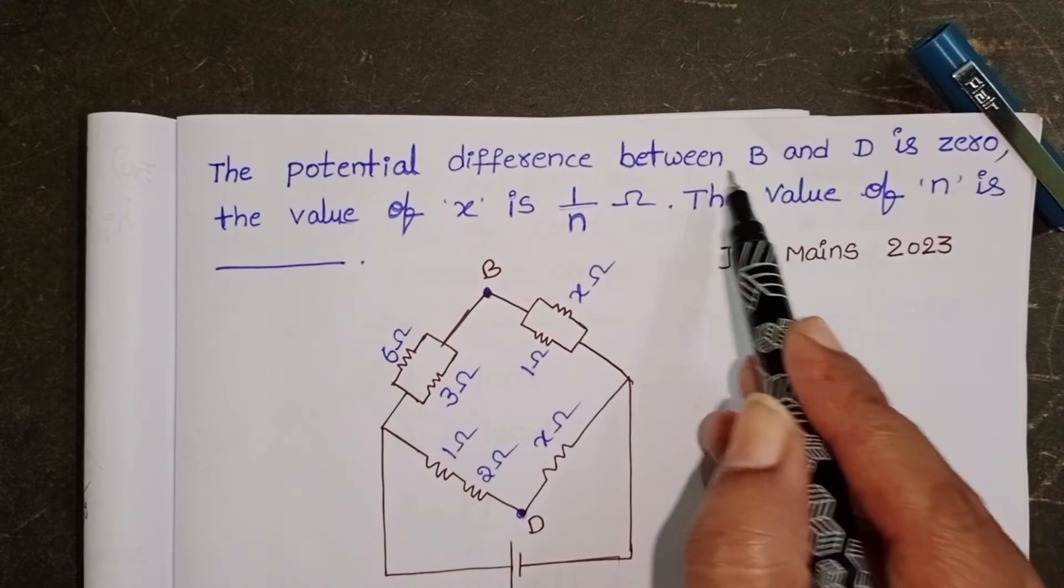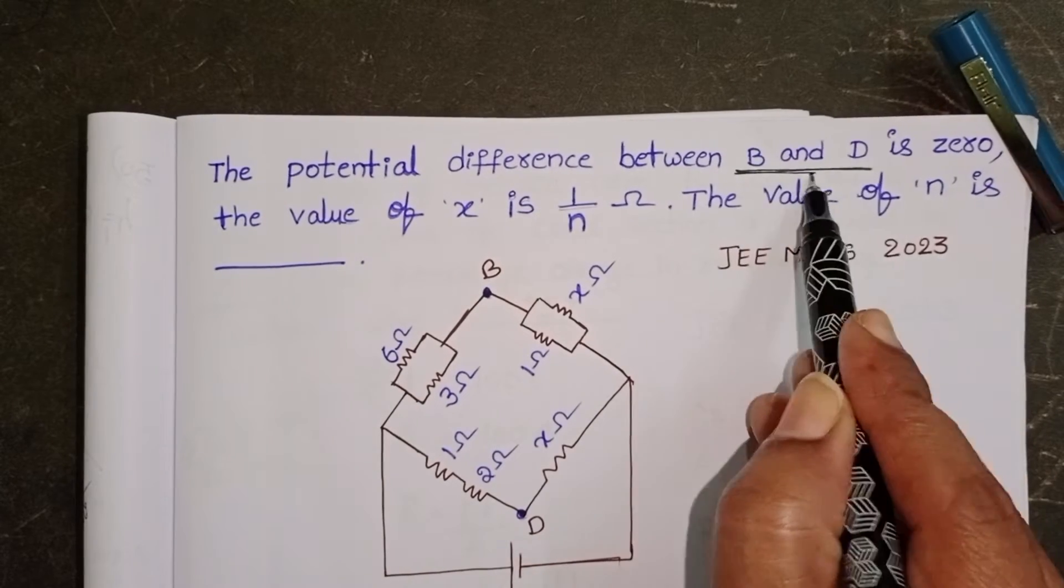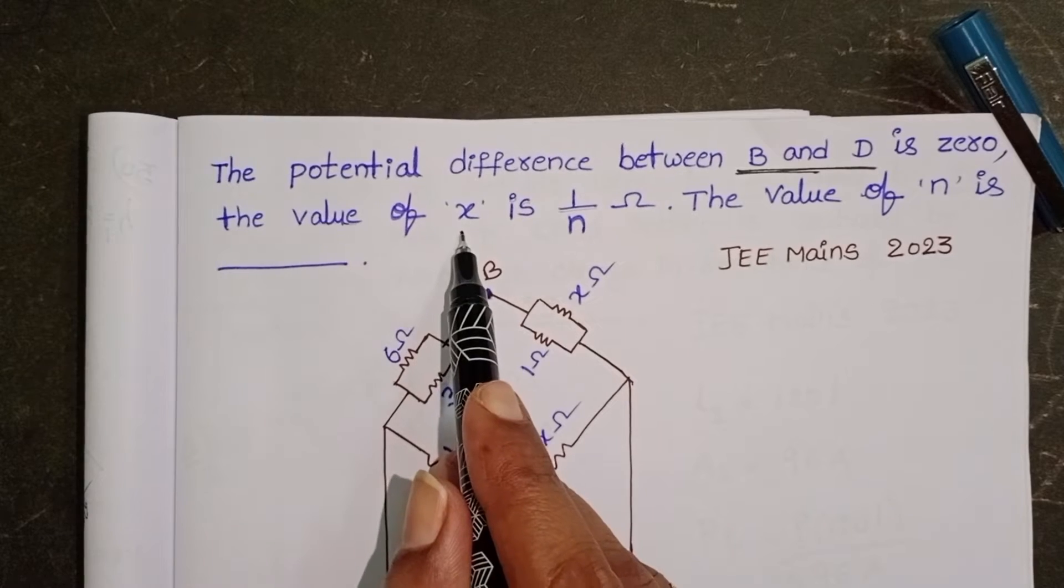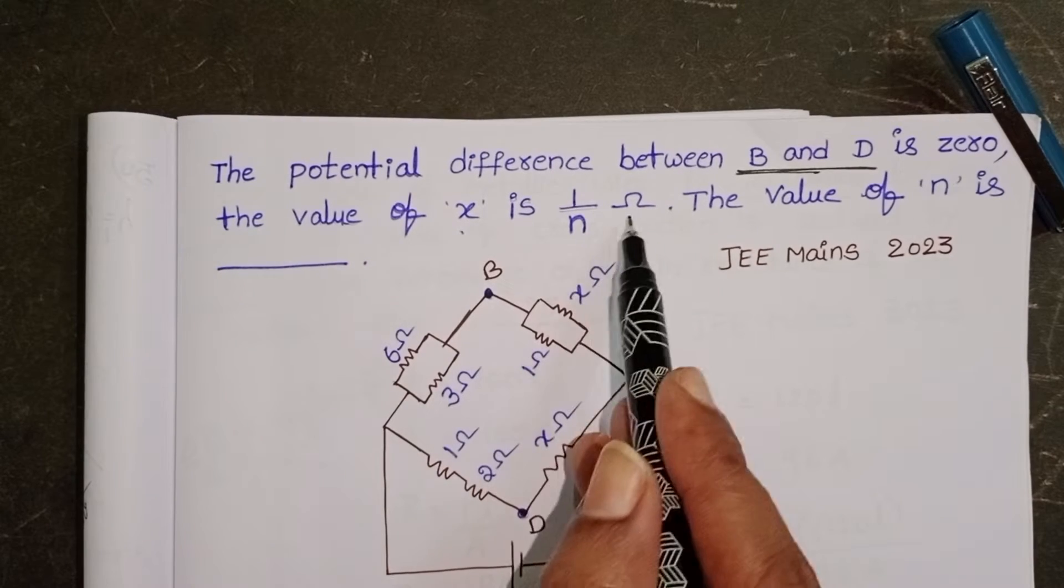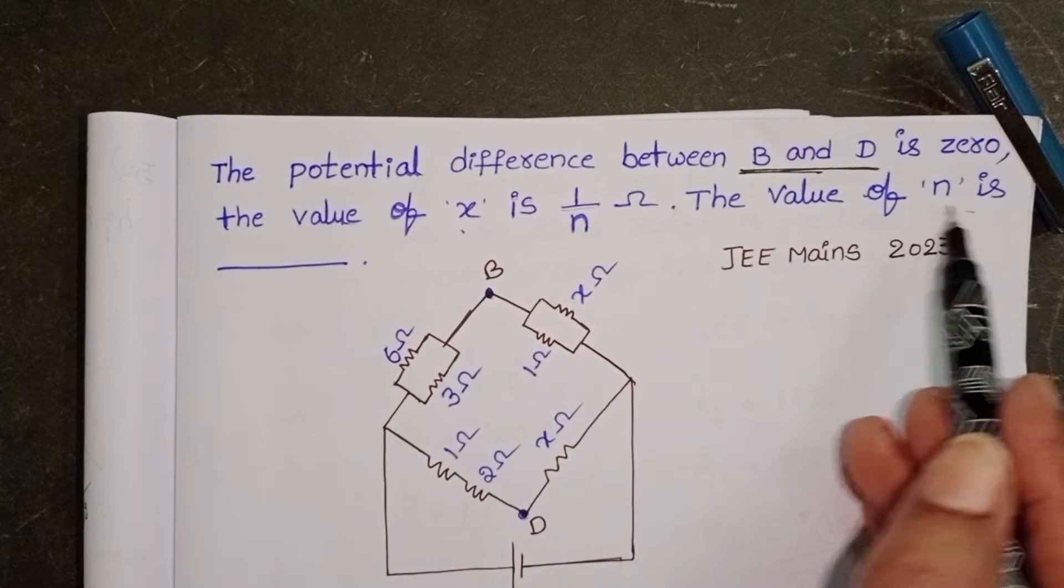The potential difference between B and D is zero. The value of X is 1 by N ohm. The value of N is...